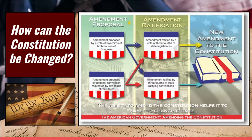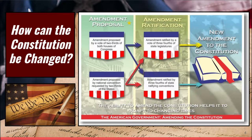There are two ways to propose a change to the Constitution. The first is that both houses of Congress — the House and the Senate — can vote by a two-thirds or more margin to propose the change. Once they propose it, the change is out there to be considered by the states. The second way is that there be a national convention requested by two-thirds of the states.